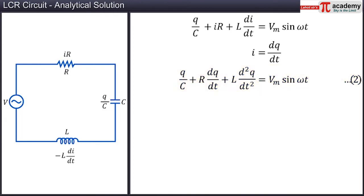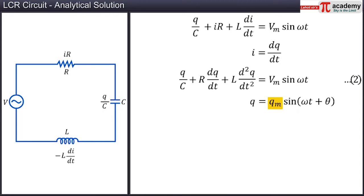As the three circuit elements — the resistor, the capacitor, and the inductor — are in series, the current through them is the same in amplitude as well as in phase. Let us now assume a solution for equation 2 as Q equal to Qm sin(omega T + theta), where Qm and theta are constants. Qm is the maximum charge on the capacitor.